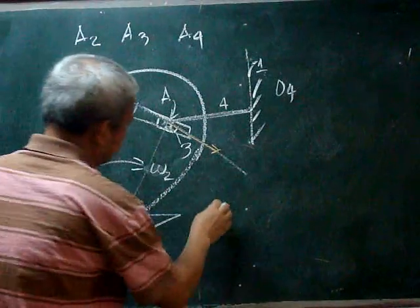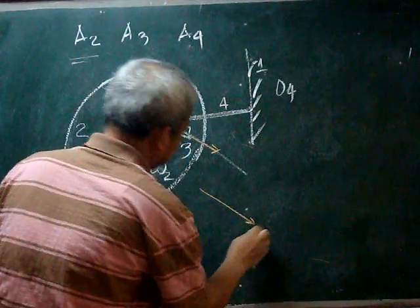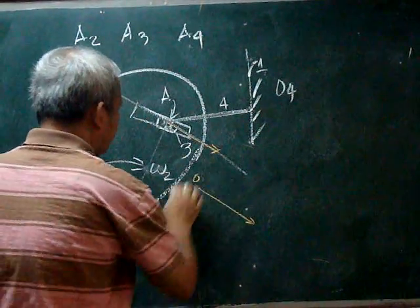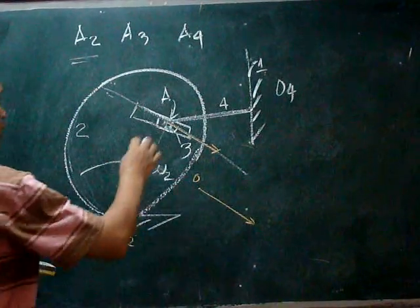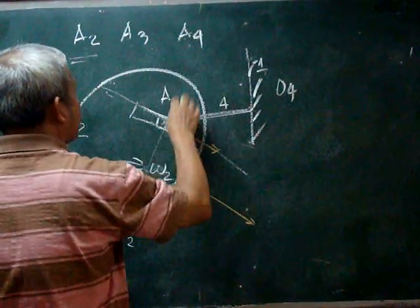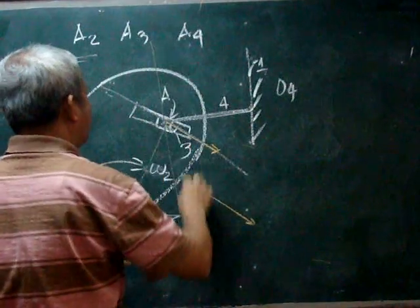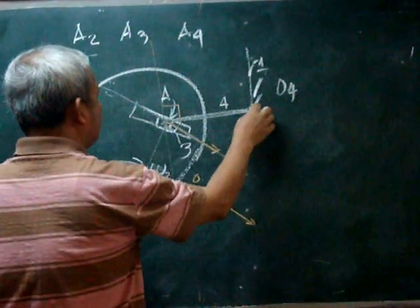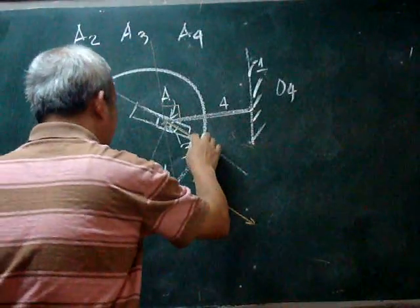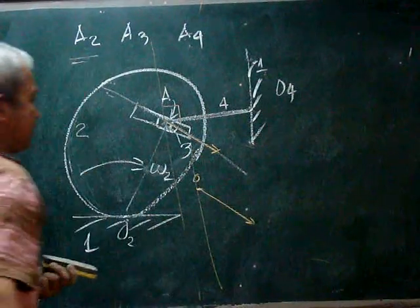And we can transfer it here with that as our origin. The velocity of point A4 or that point A at body 4 must be along this line perpendicular to O4A. So we can draw it here from our origin.